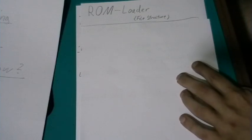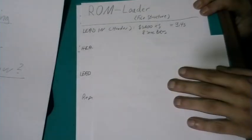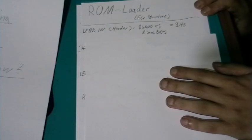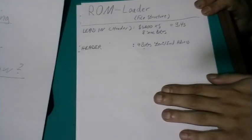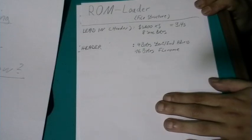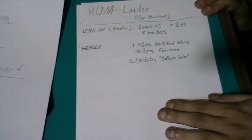Now let's continue with the file structure on tape. So first of all we have a lead in for the header. And it's hexadecimal 6A00 times short pulse totaling 9.4 seconds. Followed by 8 sync bytes. Then we have the header. It contains 4 bytes with the start end address, 16 bytes with the file name, and a little less than 200 bytes of bottom data.